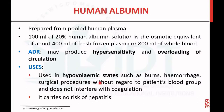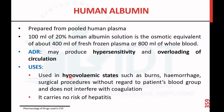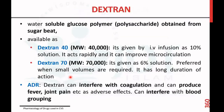Human albumin is used as a plasma expander in cases of hypovolemic states such as burns, hemorrhages, and surgical procedures, without regard to the patient's blood group. It does not interfere with coagulation and carries no risk of hepatitis. That is the use of human albumin prepared from pooled human plasma.